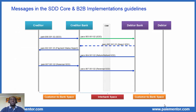Let's begin with the overview of the messages exchanged in the SDD core and B2B schemes that we find in the implementation guidelines documents. The Pax3 is highlighted in green color. It is sent by the creditor bank to the debtor bank. The direction of messages in payments matters. The Pax3 is always sent by the creditor bank, so if you work on receiving the Pax3, then you must be on the debtor bank side.